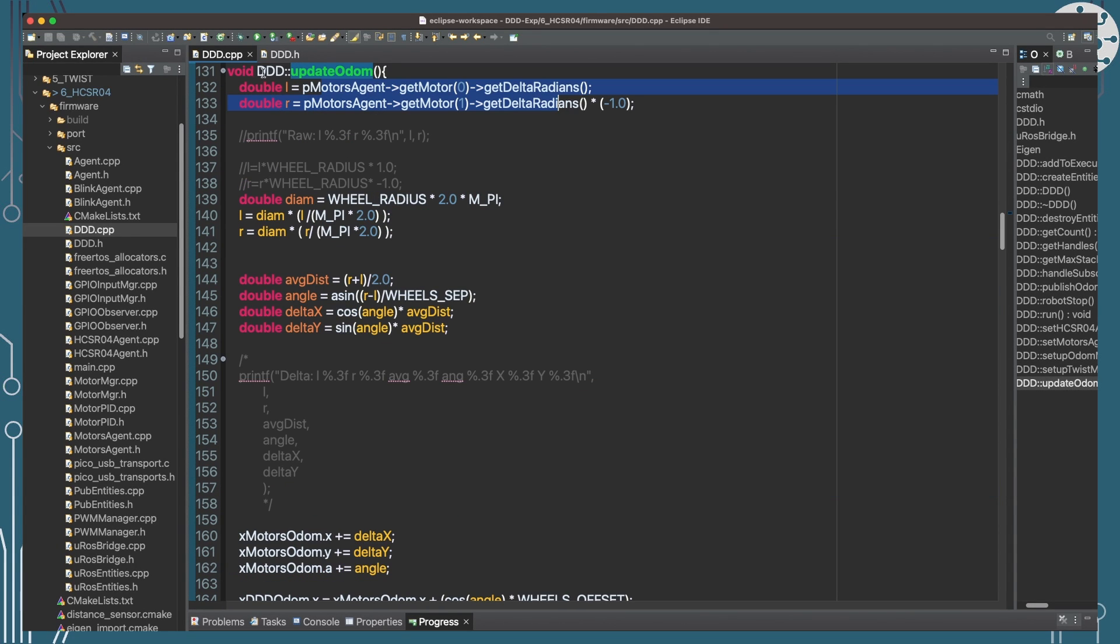So to update the Odometry, and we're going to do this 10 times a second, we're actually going to get the delta of radian rotation of both motors, and use that to calculate how far those wheels have actually turned. So how much distance have we actually managed to move on each wheel? The average of those should be the distance that we've actually traveled on the center of that axle, which is important. And then we can work out what angle we've ended up.